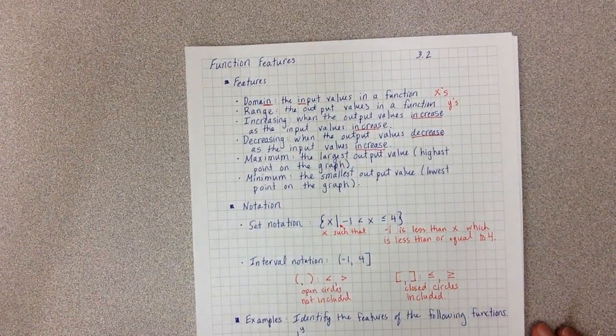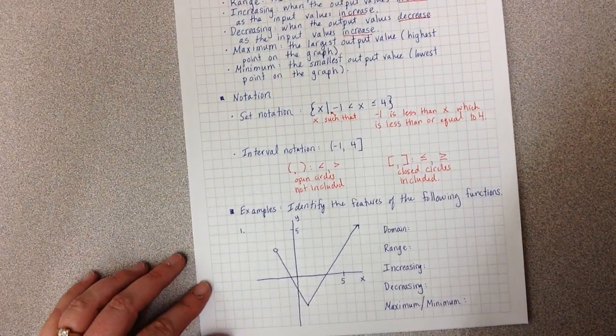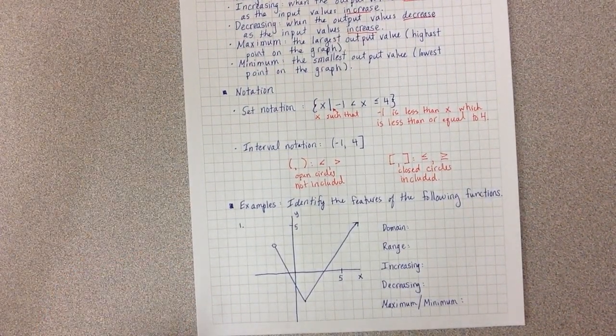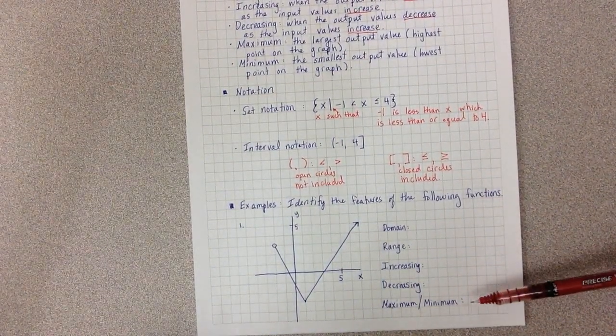So now let's look at a couple of examples. My first example has this lovely checkmark graph. And I'm asked to find the domain, the range, increasing, decreasing, and maximum, minimum.